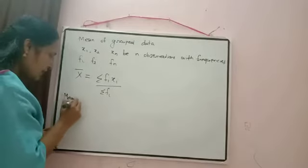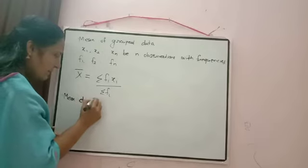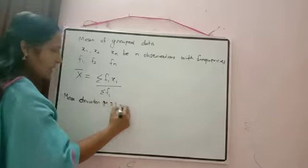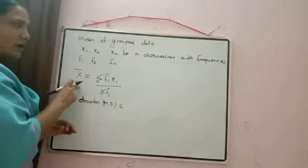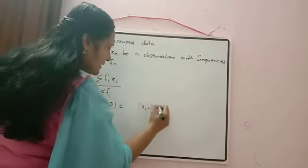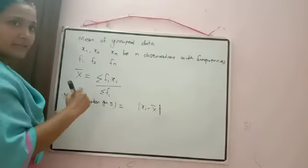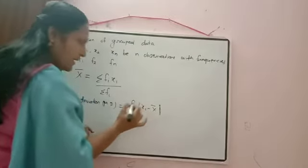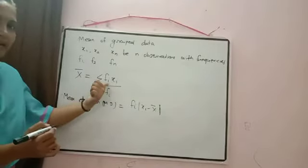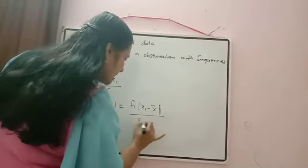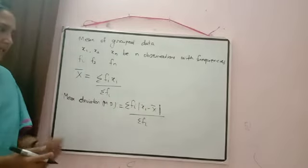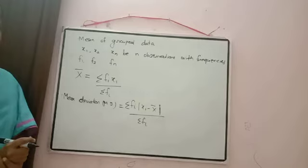Now we have to calculate the mean deviation from the mean. Mean deviation MD = Σfᵢ|xᵢ - x̄| / Σfᵢ. We calculate the difference |xᵢ - x̄|, multiply by corresponding frequency fᵢ, add all these products, and divide by Σfᵢ.